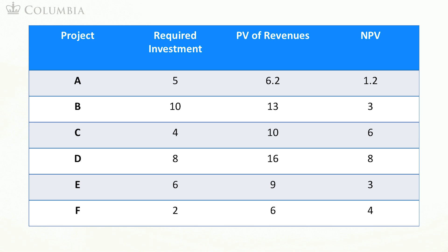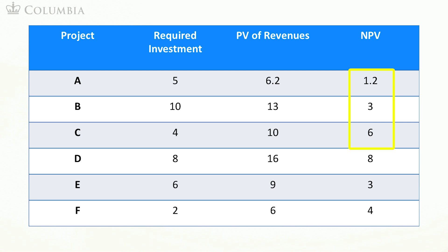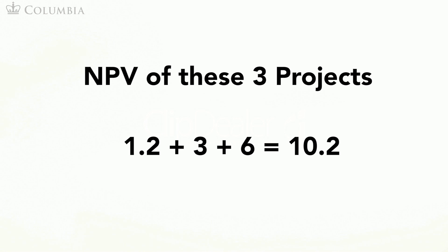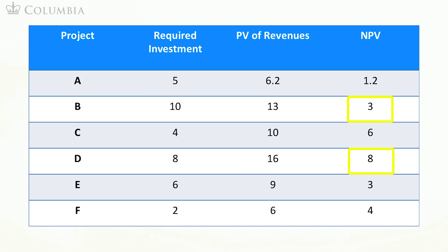One approach to this problem is simply to consider all possible combinations of projects that you can finance with $20 million. For example, one combination is projects A, B, and C. The total investment for these three projects is 5 plus 10 plus 4, or 19 million, which is below the budget. The NPV is 1.2 plus 3 plus 6, or 10.2. Another possible combination is projects B and D, with a total investment of 18 million and a combined NPV of 11. So the second set is better than the first.